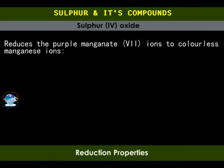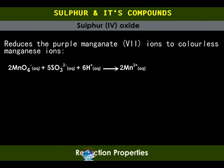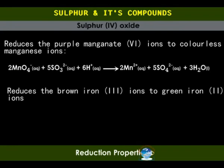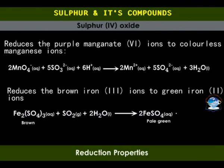When sulfur dioxide gas is bubbled into acidified potassium manganate(VII) solution, the solution changes from purple to colourless, because the manganate(VII) ions are reduced to manganese(II) ions by the sulfite ions, which are in turn oxidized to sulfate ions. When sulfur dioxide gas is bubbled into iron(III) sulfate solution, the colour changes from brown to pale green, because iron(III) sulfate is reduced to light green iron(II) sulfate. Sulfur dioxide is itself oxidized to sulfuric acid in these reactions.